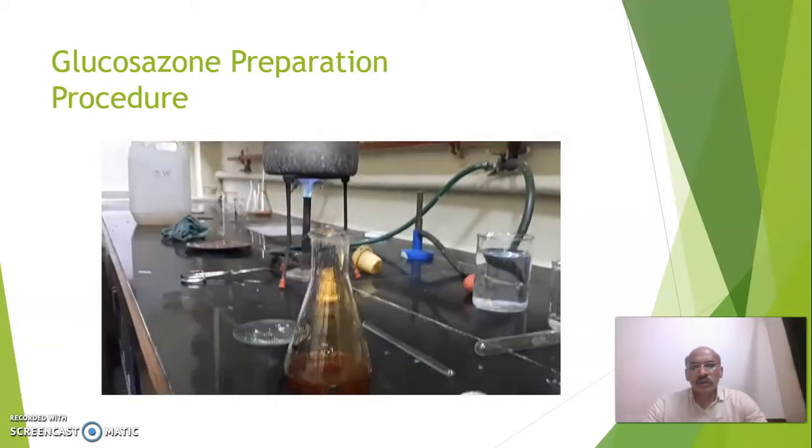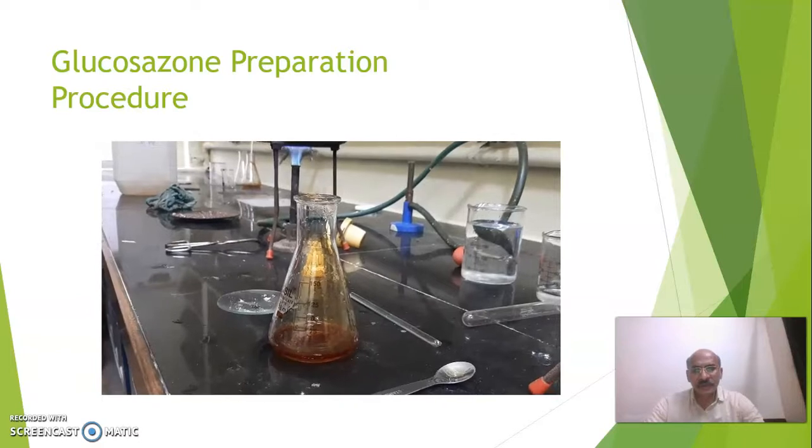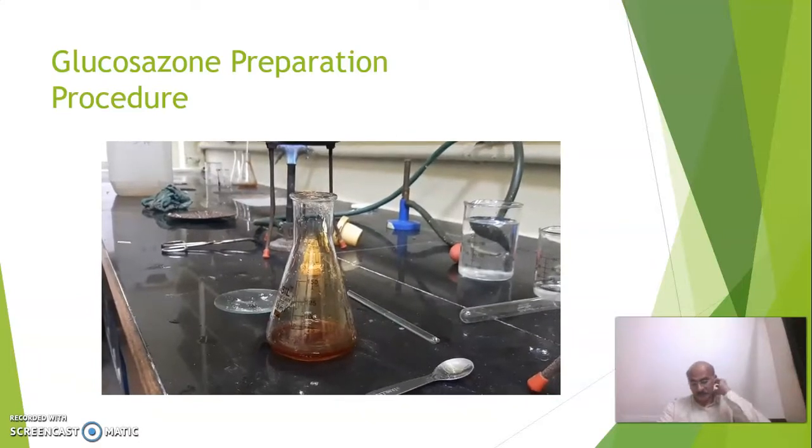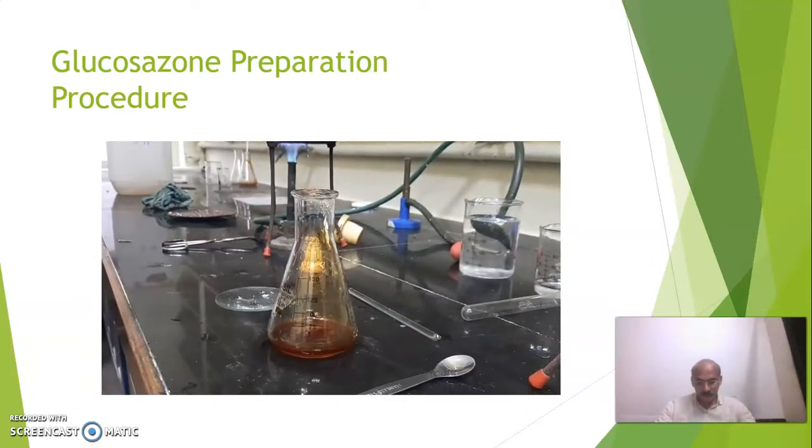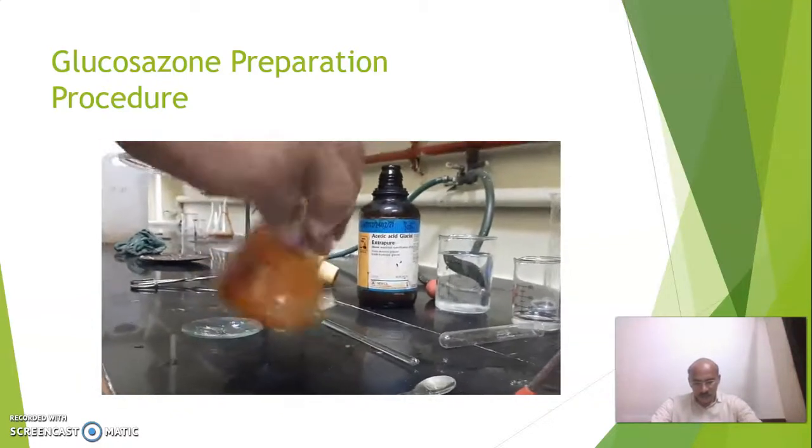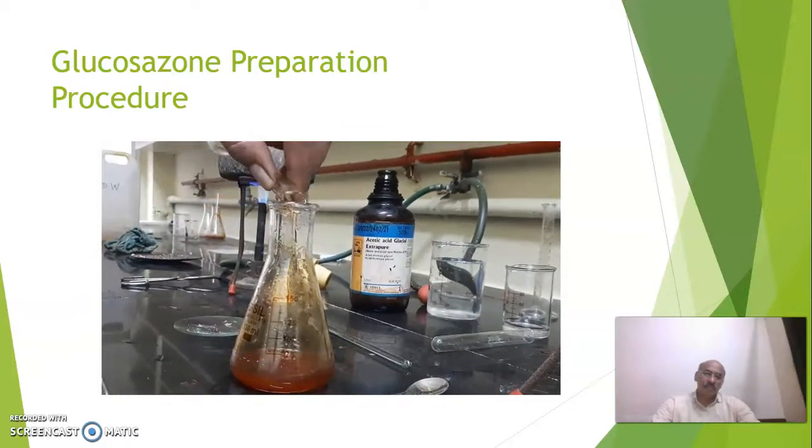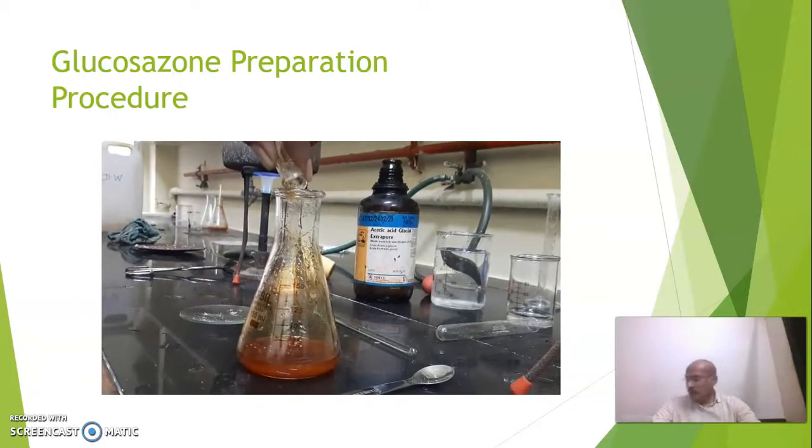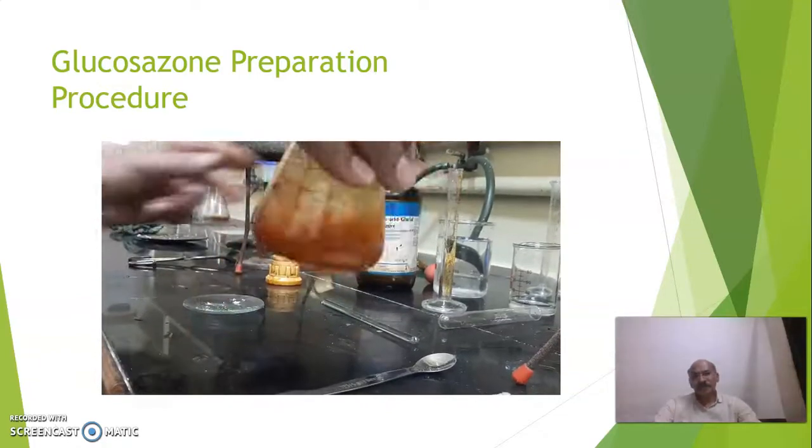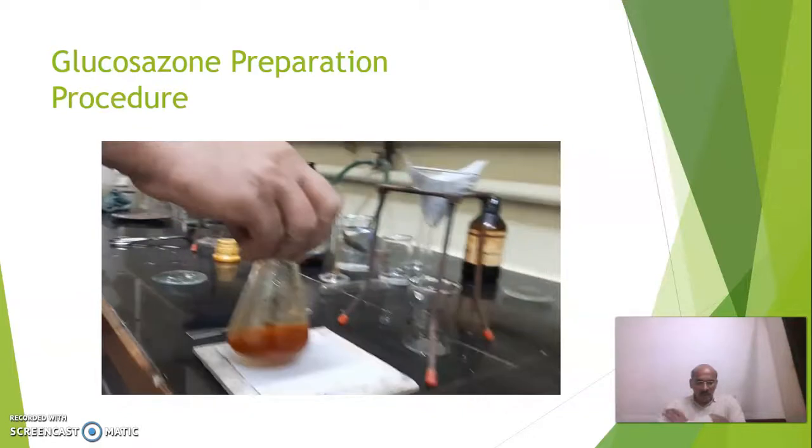Around 6 cm cube of glacial acetic acid we have to use. We will shake it and we will keep it in boiling water bath for heating.